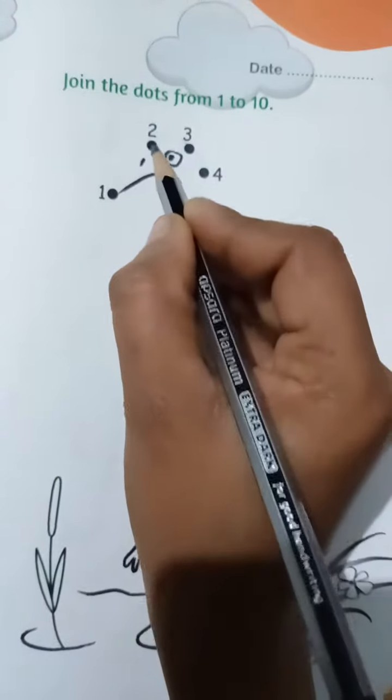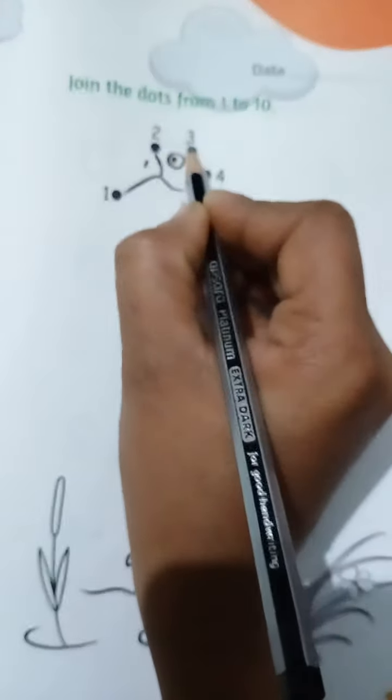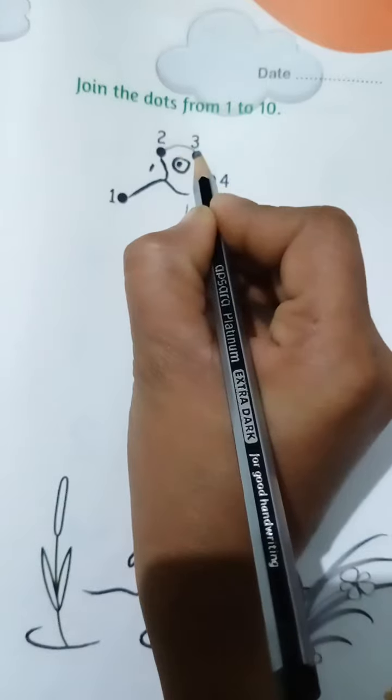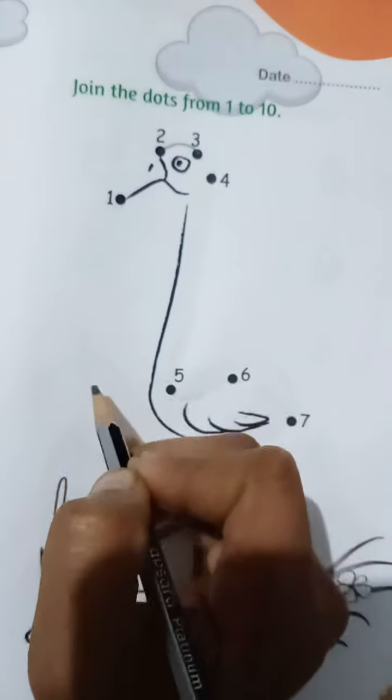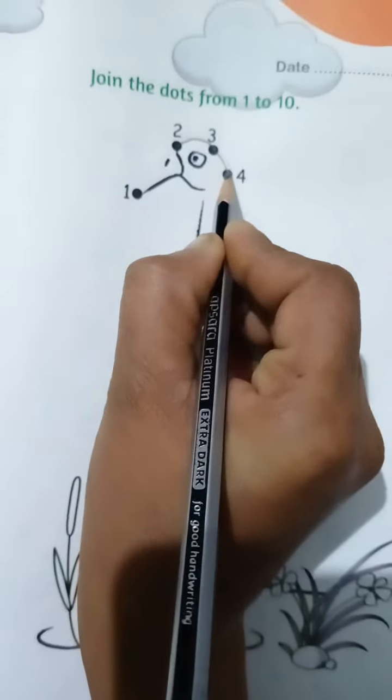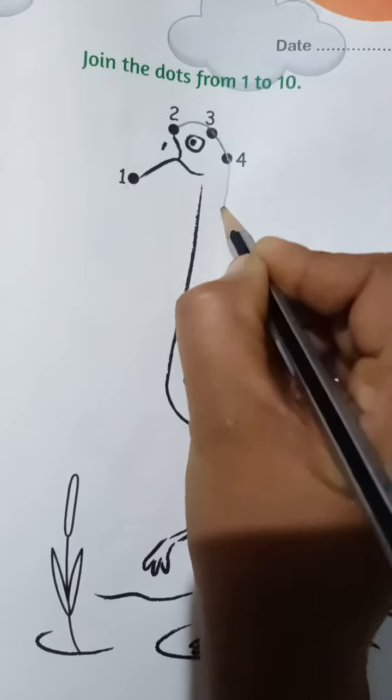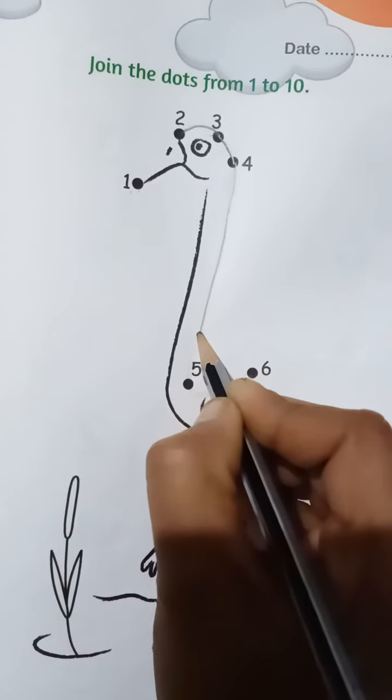Which number comes after 1? 2. So first join is 2. After 2 comes 3, so 3 will be joined. After 3 comes 4, so 4 will be joined. After 4 comes 5, so 5 will be joined.